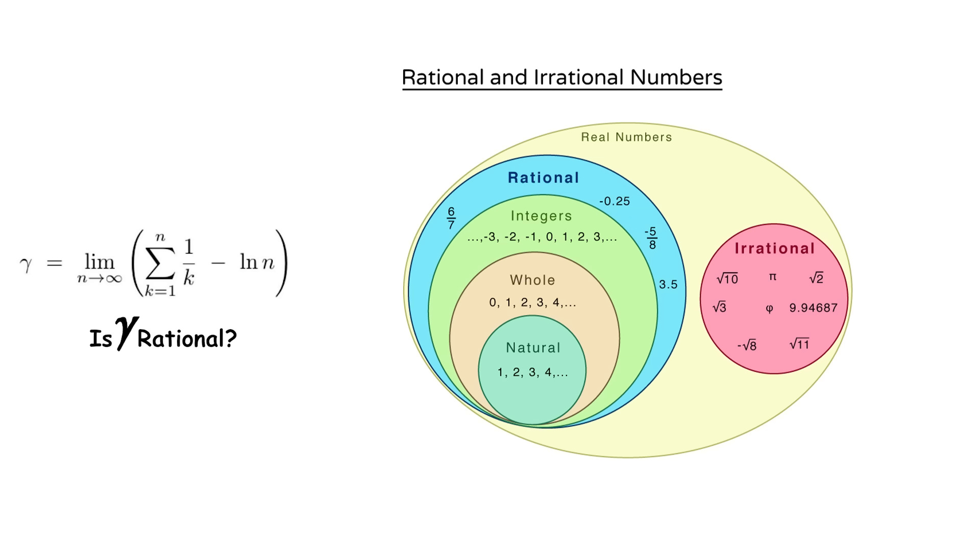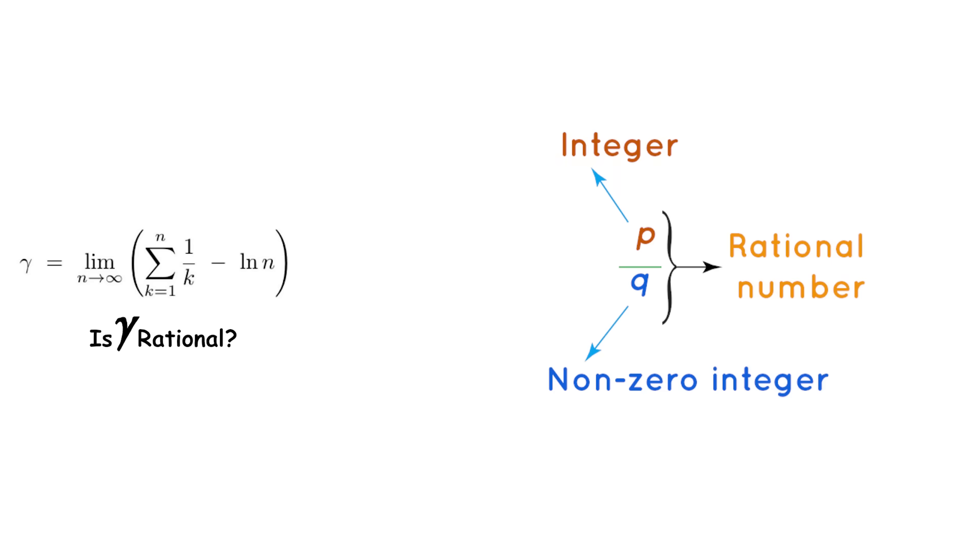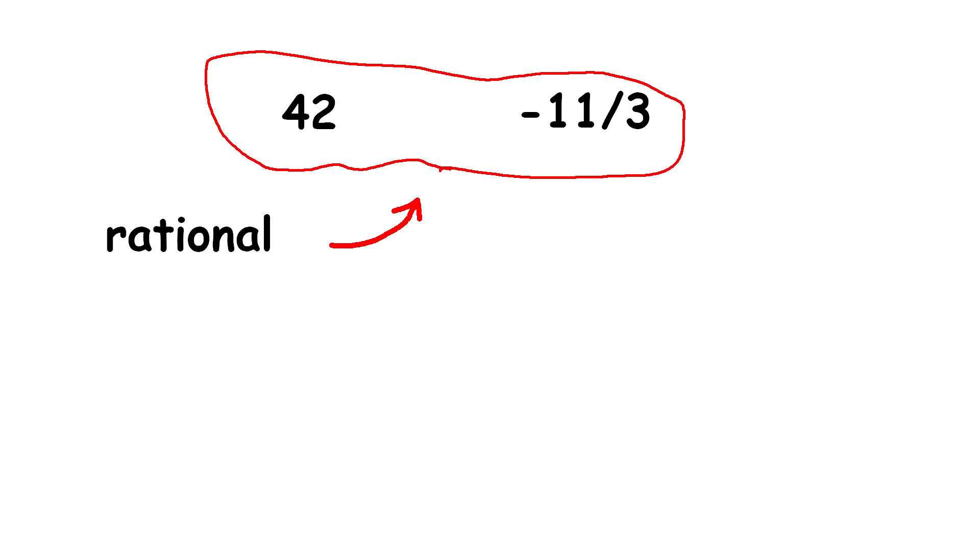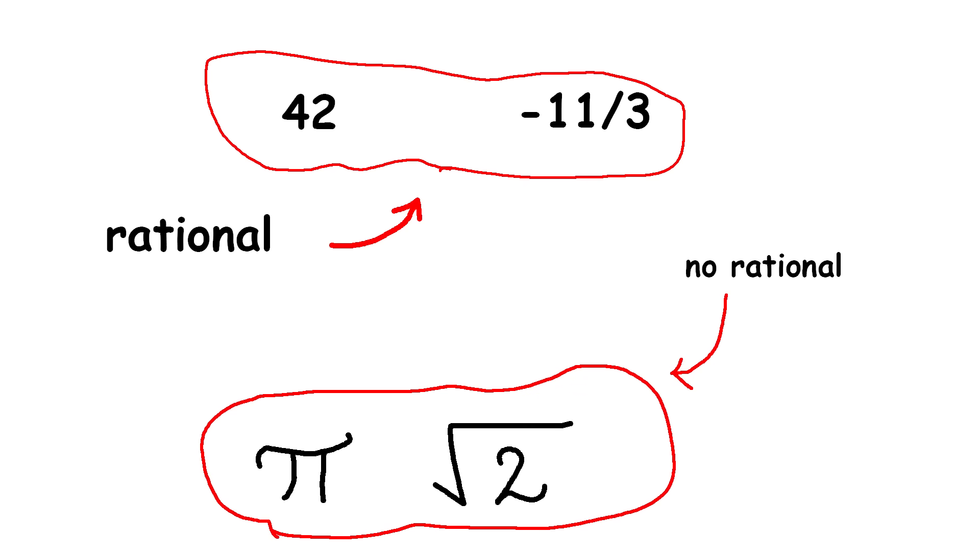Rational numbers can be written in the form p over q, where p and q are integers. So 42 and negative 11 over 3 are rational, while pi and the square root of 2 are not. It's a very basic property, so you'd think we can easily tell when a number is rational or not, right?